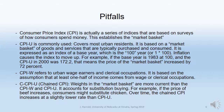Surveys are done of consumers to determine their purchasing preferences, and from that a hypothetical market basket of goods and services is created. Then each month, a survey is done of the prices of the items in that market basket. From that, we construct a base year — the 100 year, or 1 times 100. Inflation generally causes the index to move up. For example, if the base year is 1983 at 100, and the CPI in 2000 was 172.2, that means it increased by 72%.